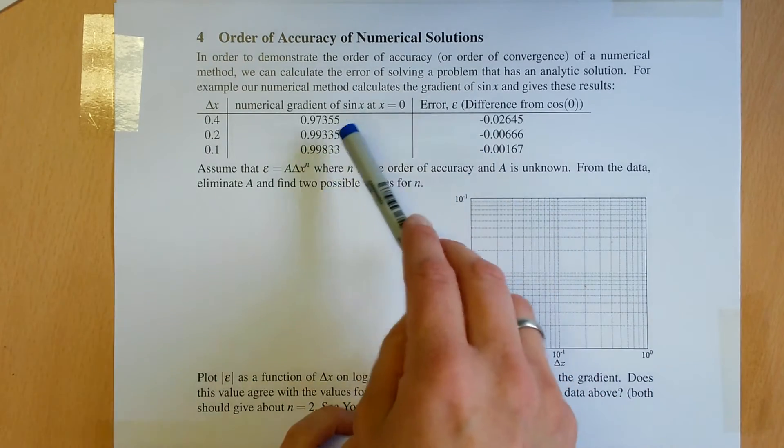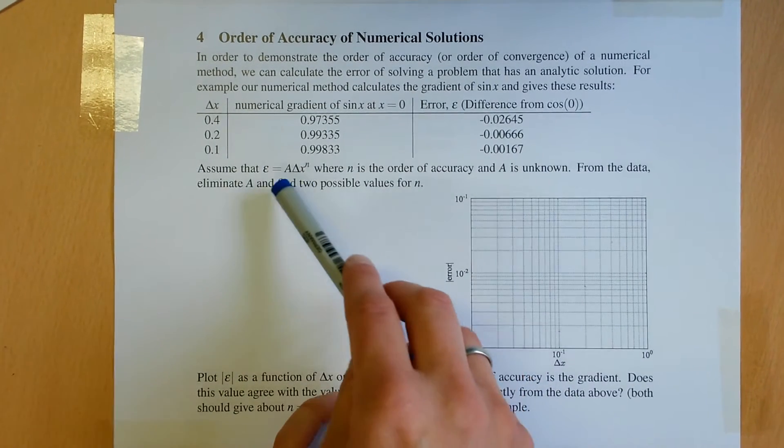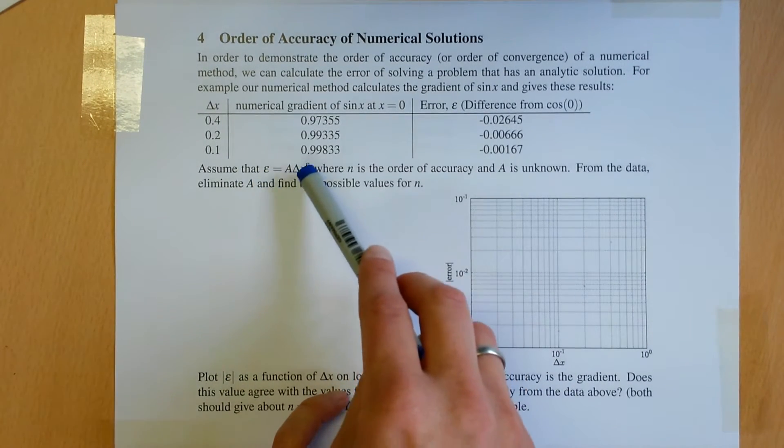Given two values of epsilon and two values of delta x, we can eliminate A and find a value, find n.